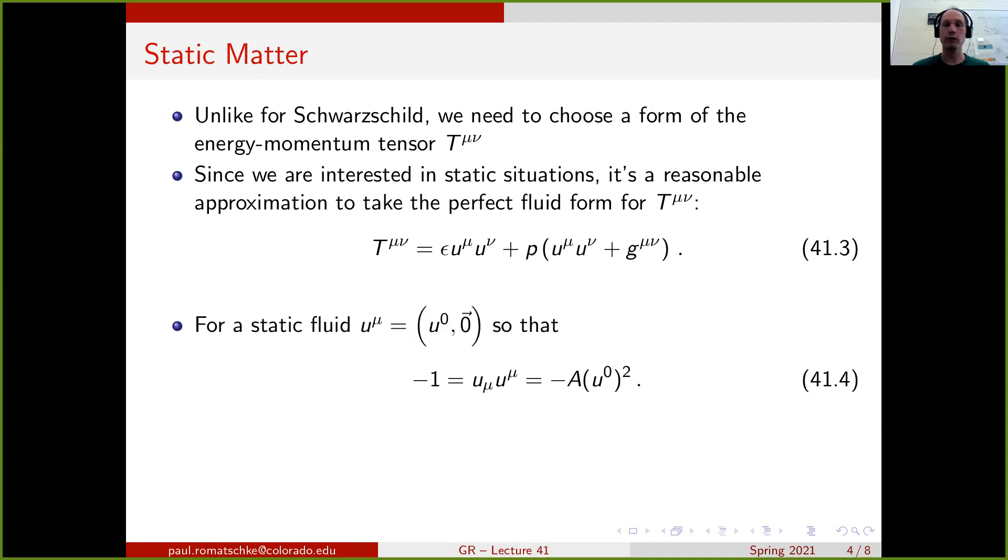Using the perfect fluid form for the energy-momentum tensor, we now restrict to static fluids, so fluids that have vanishing space-like velocities. So the fluid 4-vector must have a time component and zero in the spacelike components. And we can fix the component u0 by requiring that the 4-velocity has to be normalized to minus 1. If we write this in terms of the 0-0 component of the metric and the u0 component of the fluid velocity, we find that this has to equal minus A times u0 squared.